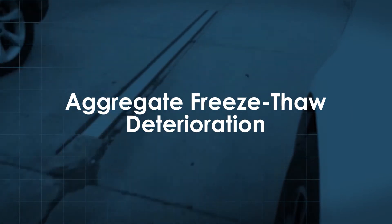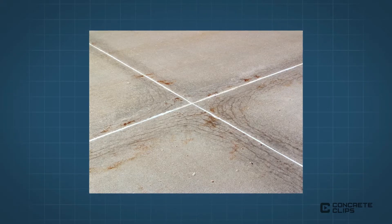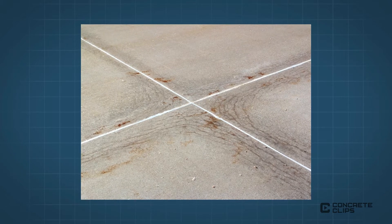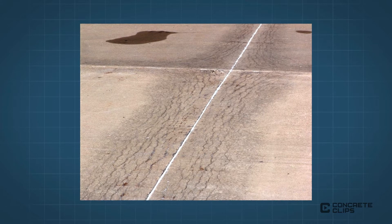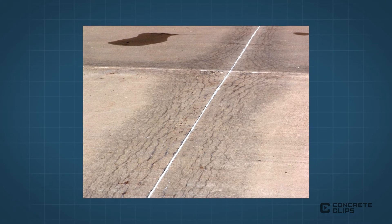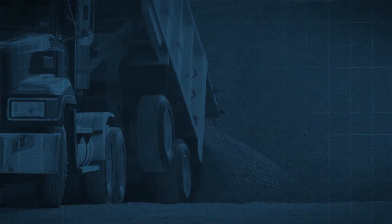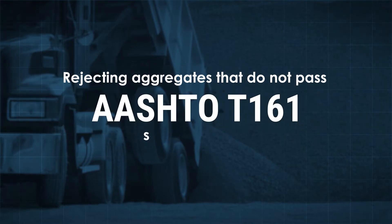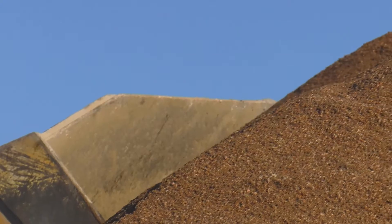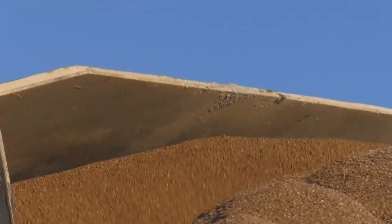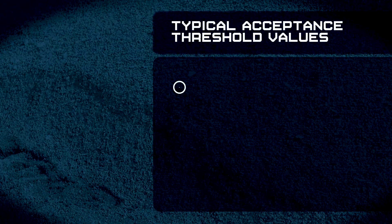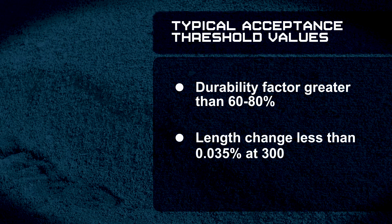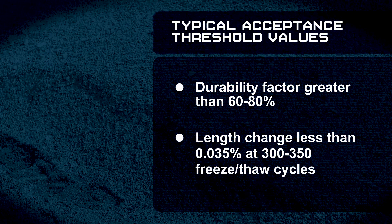Certain coarse aggregates can fracture or dilate excessively when exposed to repeated freezing and thawing in a saturated state, resulting in cracking of the mortar and deterioration of the concrete. Such cracking is typically observed parallel to joints and cracks where more moisture is available. Freeze-thaw deterioration of aggregate can be controlled by rejecting aggregate sources that do not pass AASHTO T161 screening tests, or by crushing susceptible aggregates to a size where they are no longer susceptible. Typical acceptance threshold values include a durability factor greater than 60 to 80 percent and length change less than 0.035 percent at 300 to 350 freeze-thaw cycles.